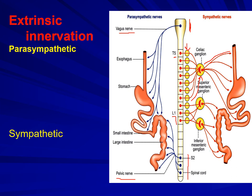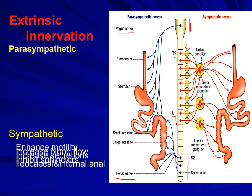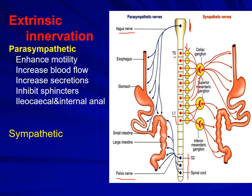Parasympathetic supply in general increases the entire function of GIT — it enhances both the motile and secretory activities, enhances the rate of blood flow, and stimulates the entire GIT function. However, it inhibits the sphincters like the ileocecal and internal anal sphincters. The sympathetic division opposes almost all the activities that were stimulated by the parasympathetic one.